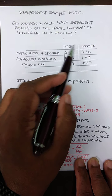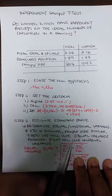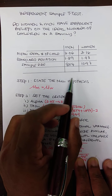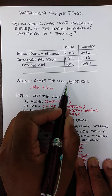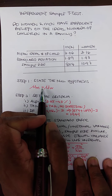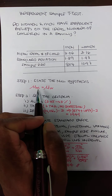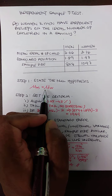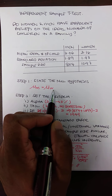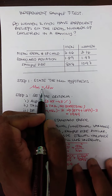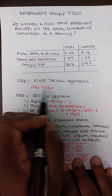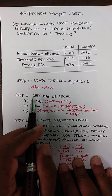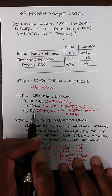We want to test whether these two groups have similar or different beliefs. The first step is always to write the null hypothesis. The null hypothesis states there is no difference, meaning the mean (mu) for men is equal to the mean (mu) for women — there is no difference between the two groups.